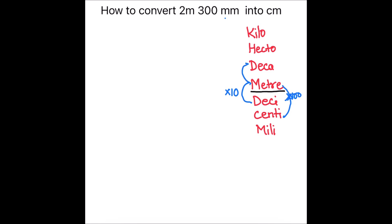Similarly, when we go up, to convert from meter to decameter we divide by 10. To convert from meter to hectometer we divide by 100, and from meter to kilometer we divide by 1000, because one kilometer is 1000 meters.